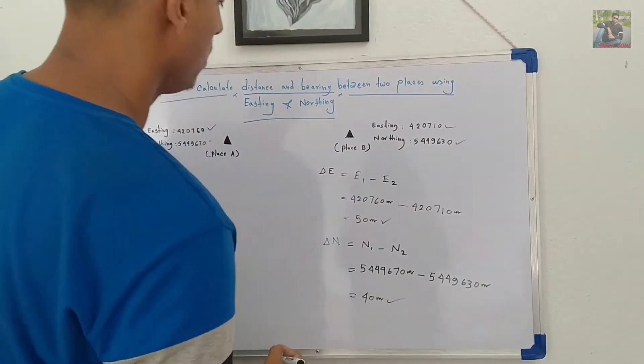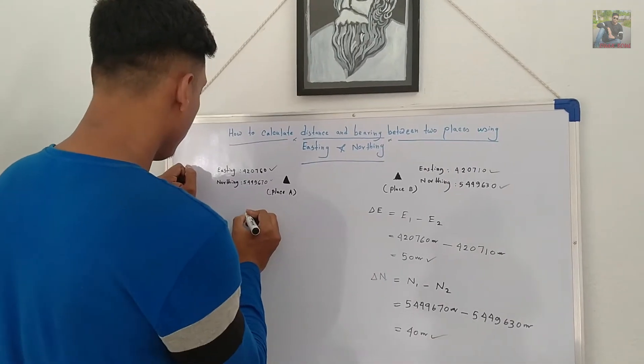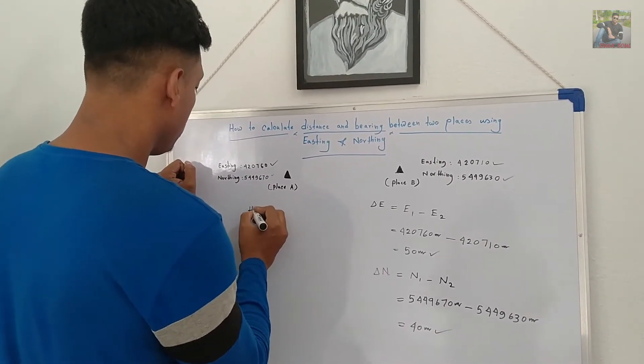Here, delta E and delta N have been computed now. Now, time to measure the horizontal distances between place A and place B.